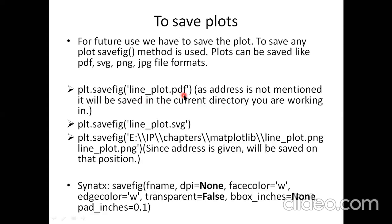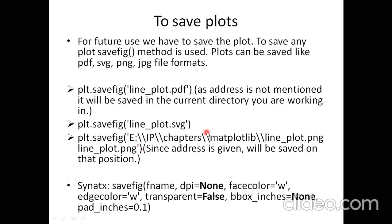Just mention the file extension — .pdf, .svg, .jpg, .png. If you do not mention an address, it saves by default to the current working directory. If you want a specific location, provide the full path — for example, E drive, IP folder, chapters folder, matplot folder — then give the file name with extension.